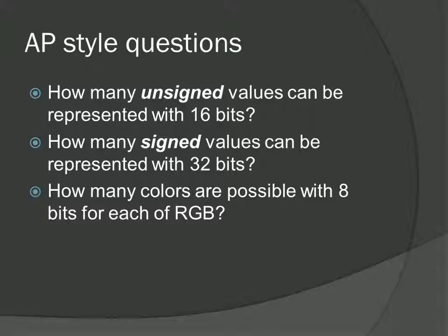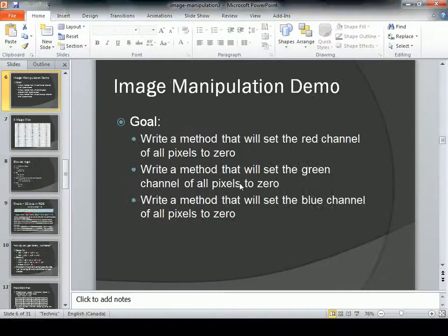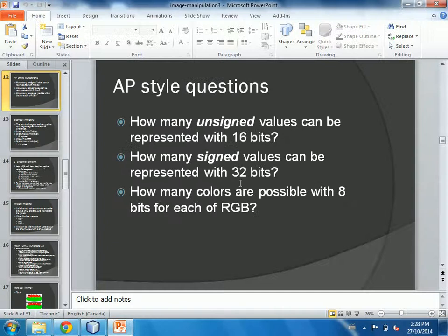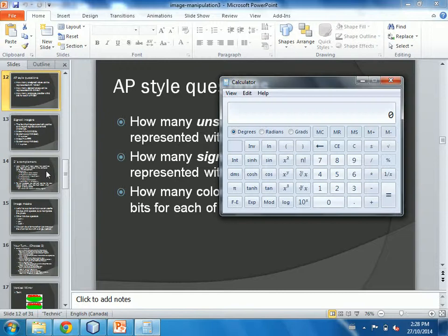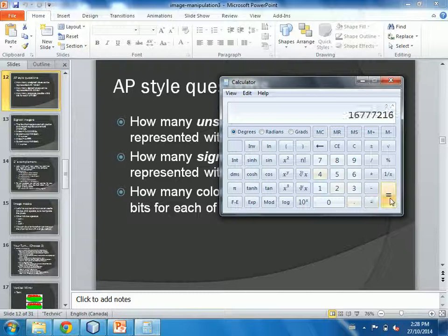Now we can calculate how many colors are possible with 8-bit RGB. You have 8 bits for each of red, green, and blue, for a total of 24 bits. So there are 2^24 unique colors — about 16.7 million. When you buy a TV and they brag about how many colors it can make, that's literally all they're telling you: 8 bits in each RGB channel. You can pay more for a TV with higher bit depth, though the human eye may not distinguish beyond that.